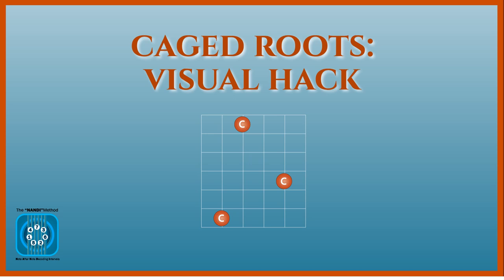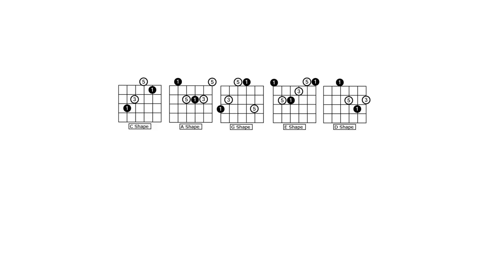In this lesson, we will discuss a hack to visualize CAGED shapes using the NANDI method. The word CAGED refers to the five open chord shapes of C, A, G, E, and D major.